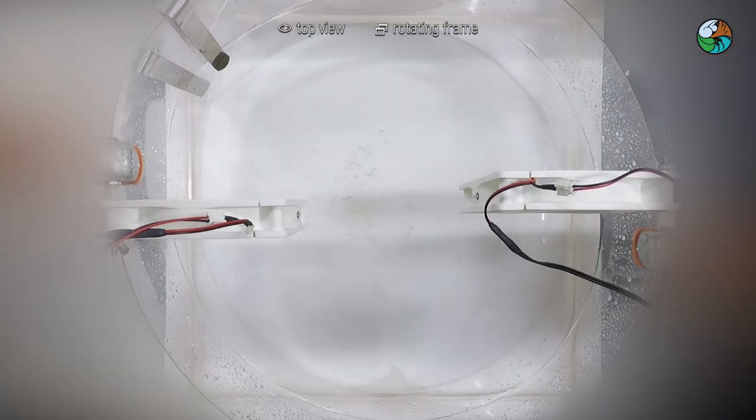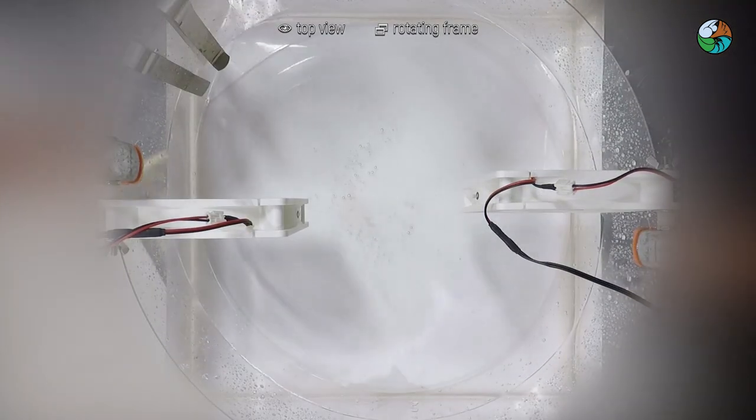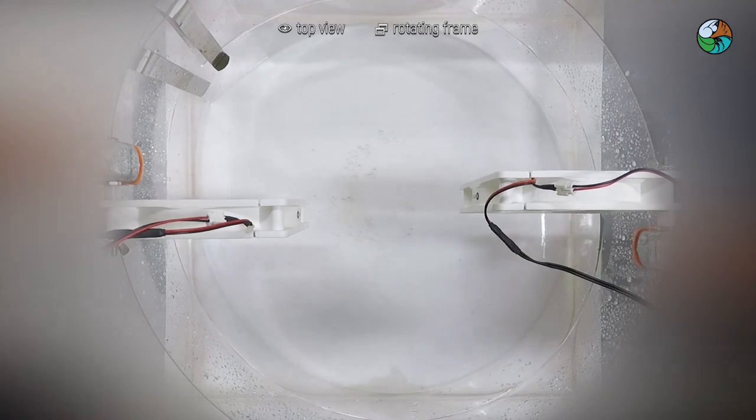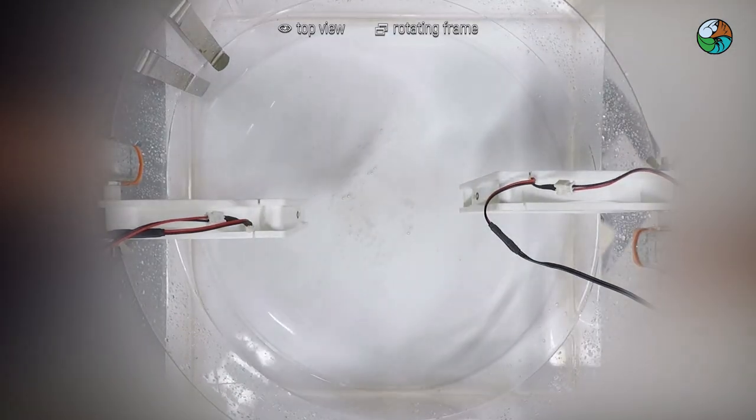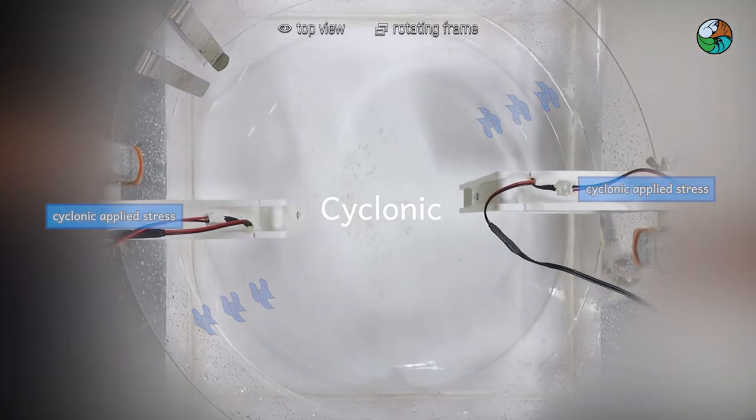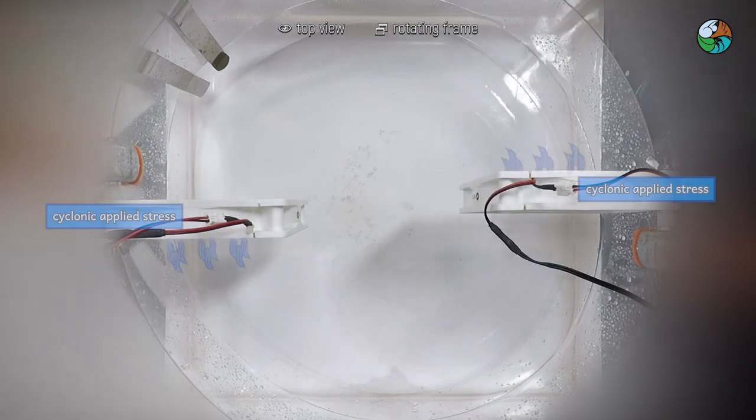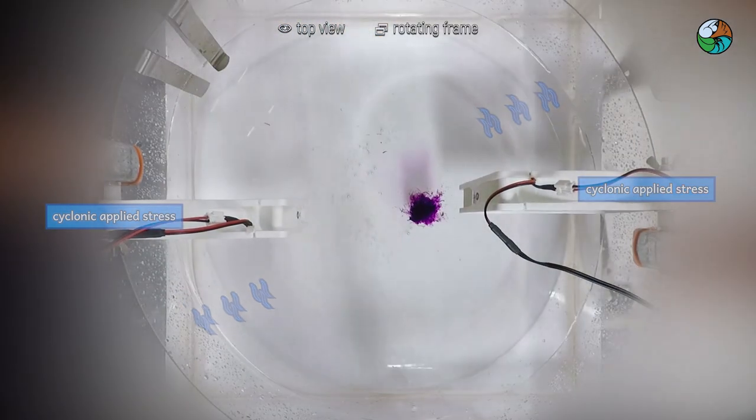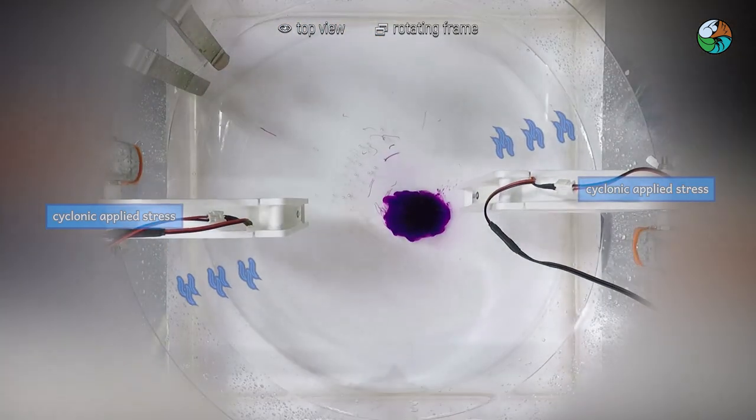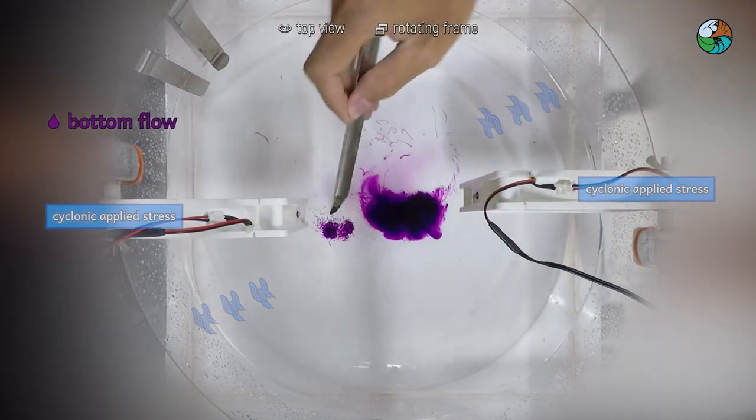Wait until the circulation has developed. This may take a few minutes. Here, the fans are set to produce cyclonic stress. Wind blows the same direction as the rotation of the tank. Sprinkle some potassium permanganate crystals at the center. These purple crystals sink and track the bottom flow.